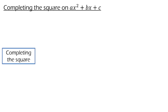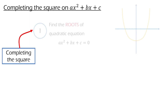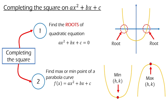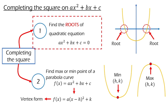Hey guys, today we are going to discuss how to use completing the square on quadratic equations. Completing the square method in general is used to find two things: one is to find the roots of a quadratic equation, and the second is to find the maximum or minimum point of a parabola curve. This can be done by converting it to vertex form. For this video, we are going to discuss how to use completing the square to find the roots of the quadratic equation.